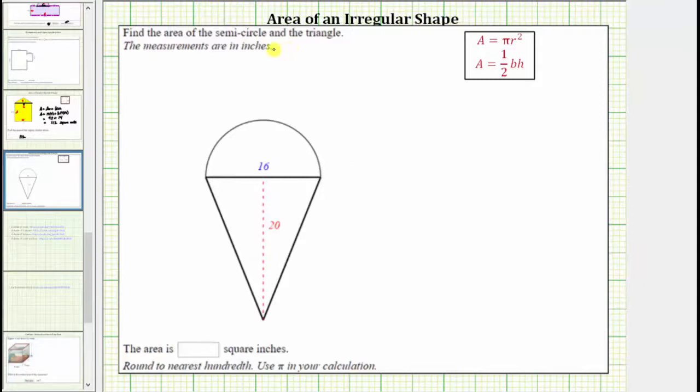We're asked to find the area of the semicircle and the triangle and we're told the measurements are in inches. Let's go ahead and label this length 16 inches and this length 20 inches.